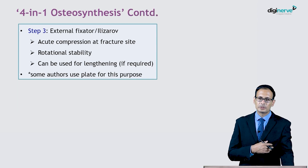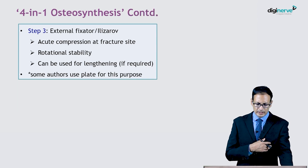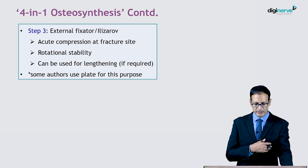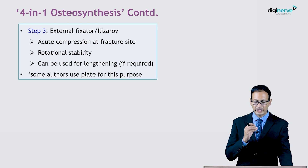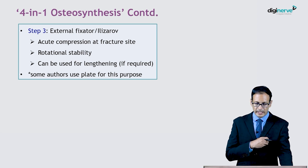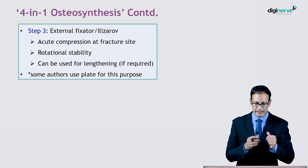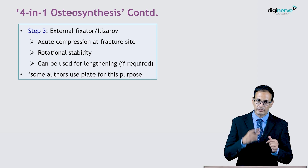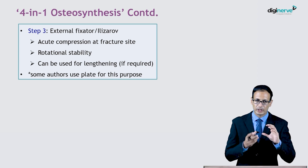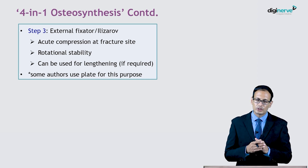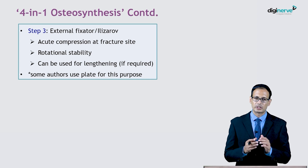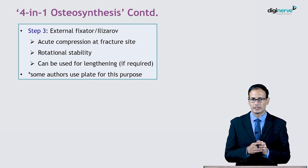Then comes the bony fixation part. Many surgeons use Ilizarov or external fixators to achieve acute compression at the fracture site and to provide rotational stability, because the intramedullary device may not provide rotational stability. It can also be used for lengthening if required. Some authors use locking plates for this purpose to achieve rotational stability.